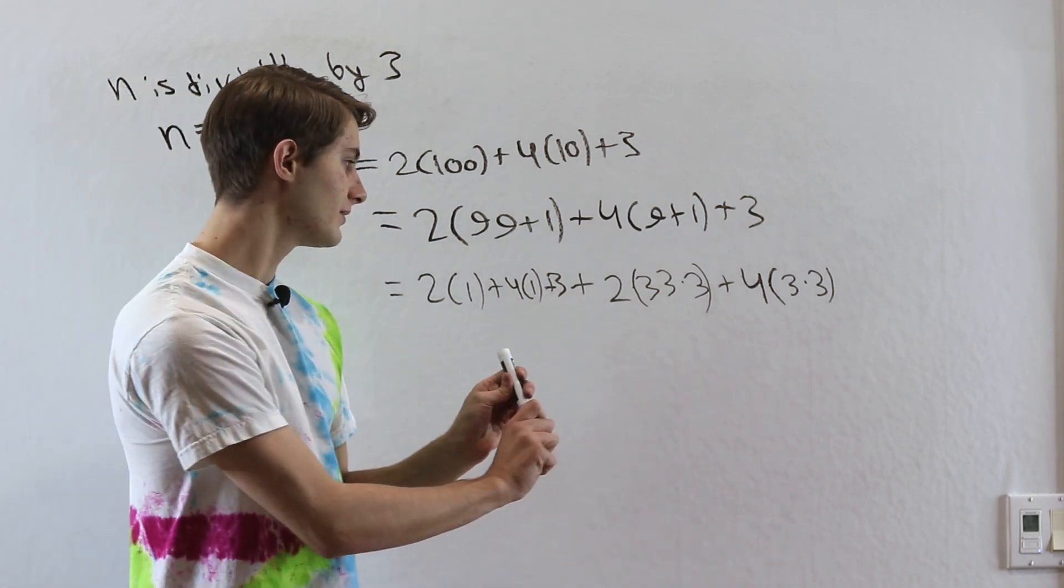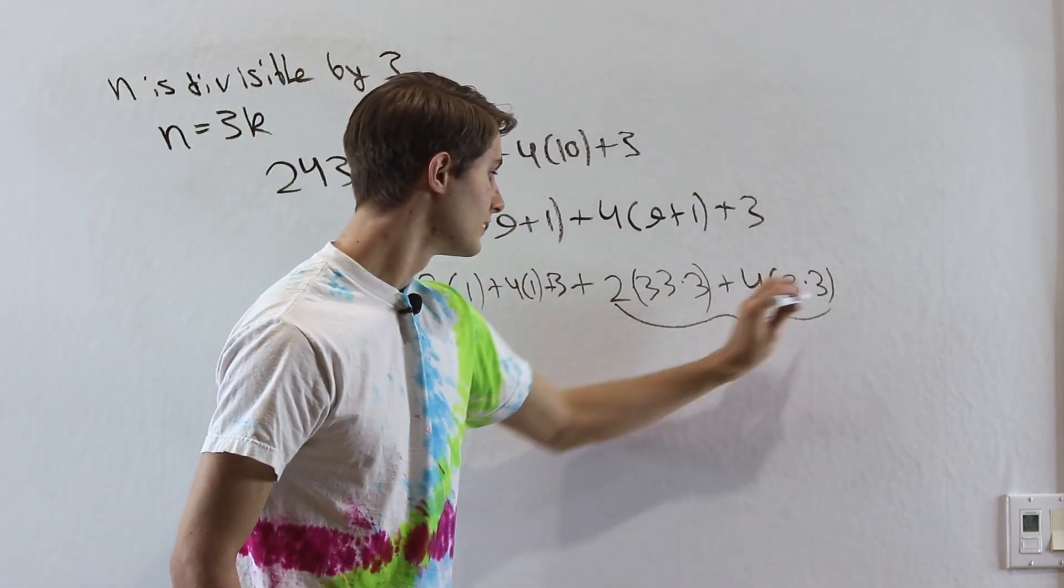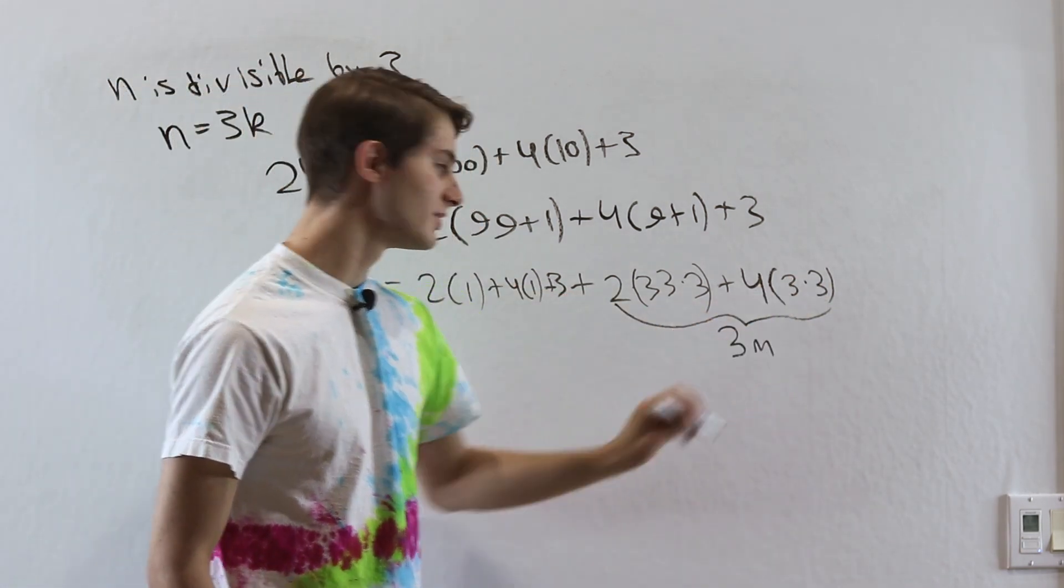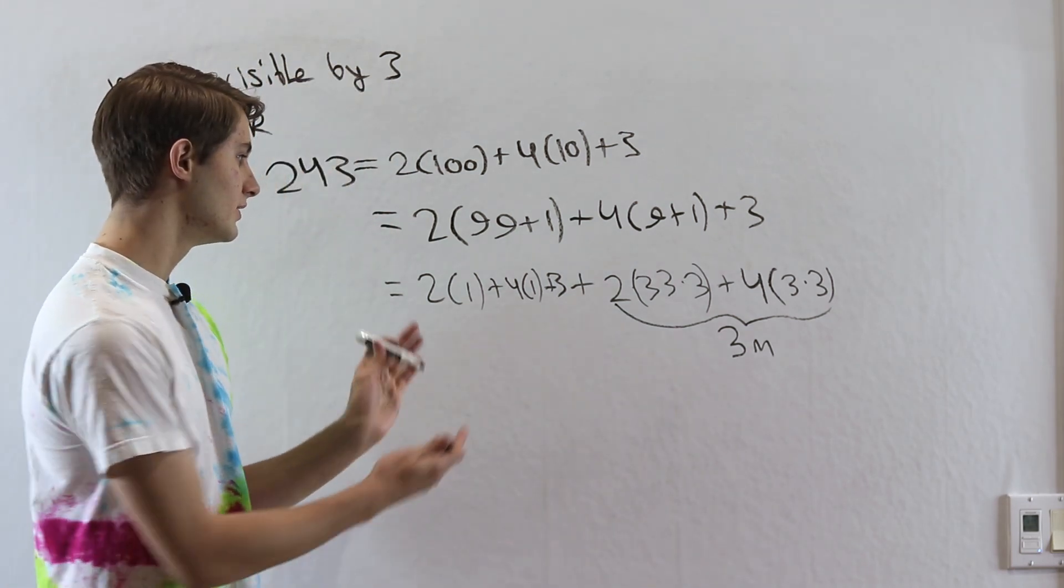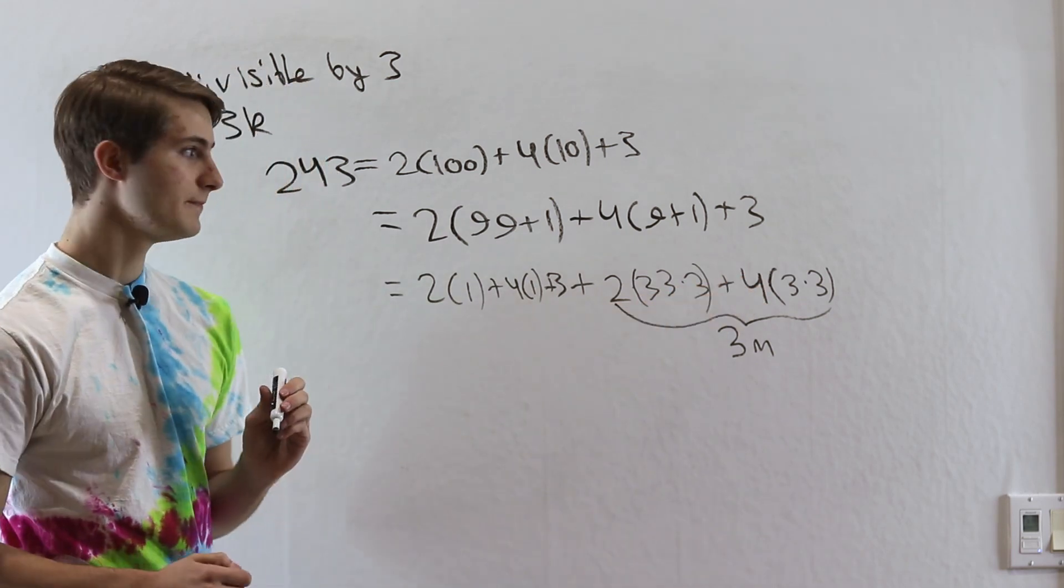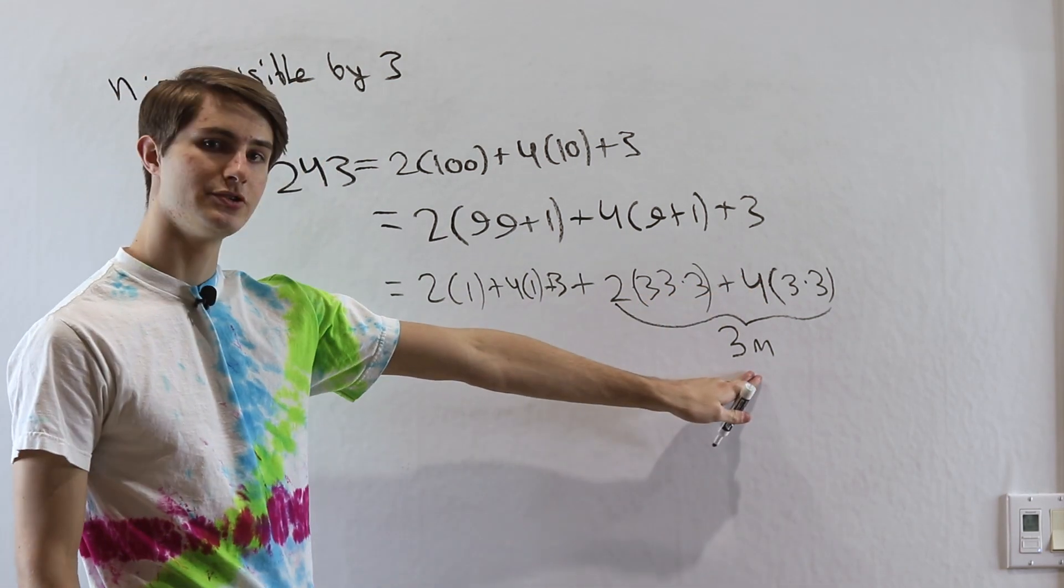And therefore this whole thing right here is going to be 3 times some integer m. That means that if we want to look at whether this whole number is divisible by 3, we really don't have to worry about this part over here.